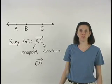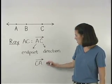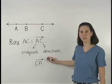Note that when representing a ray, such as ray CA, the small arrow always points to the right, even if the ray itself is going to the left.